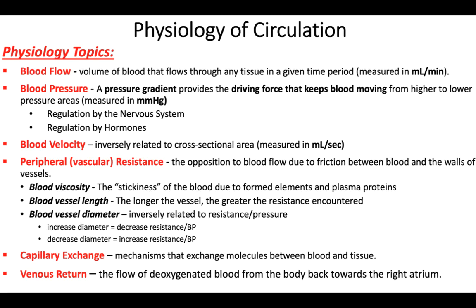The highest pressure is in the left ventricle and the aorta. The lowest pressure is in the right atrium, which is the final destination in the systemic circuit. We'll also talk about what regulates blood pressure — how the nervous system and hormones influence it. Blood velocity is given in milliliters per second and is inversely related to cross-sectional area. When blood enters a bigger area it slows down. The largest total area is in the capillaries — not one individual capillary, but all capillaries combined have much more area than the aorta alone. So blood actually slows down in the capillaries and speeds back up going to the heart.